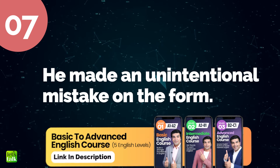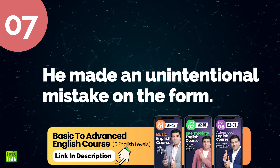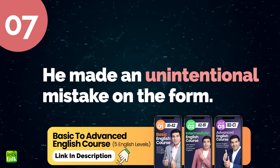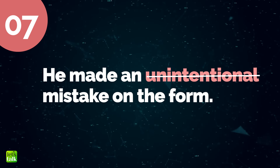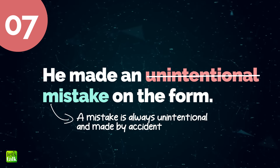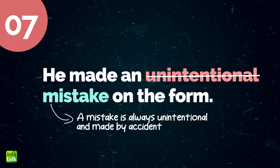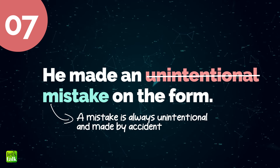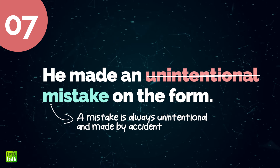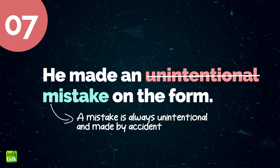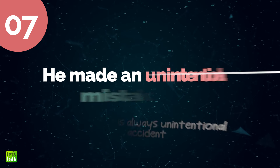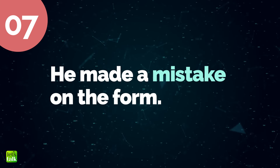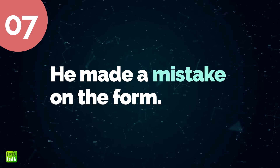He made an unintentional mistake on the form. The word unintentional is not needed because a mistake is something that happens by accident or without planning. So saying 'unintentional mistake' is like saying the same thing twice. Instead, you can just say 'He made a mistake on the form.' This sounds much better and clearer.